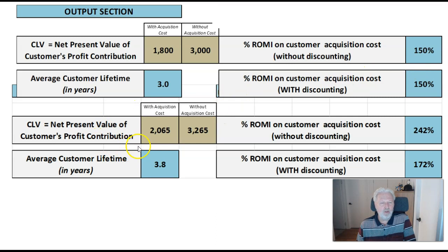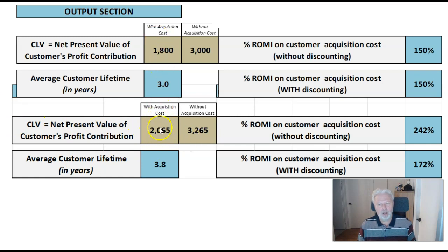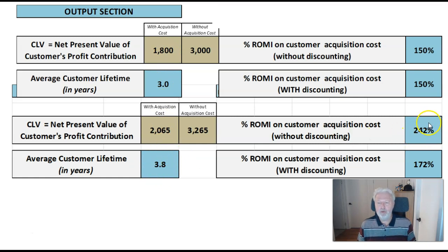This is the second, more complete calculation with the assumptions built in, and as you can see we get a different set of numbers. After taking out the acquisition cost, we get $2,065 — that's $265 more than the simple method. It shows we actually keep customers longer and get a better return on investment.